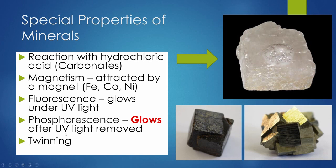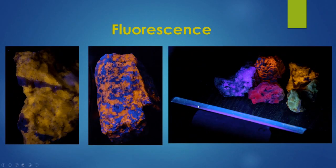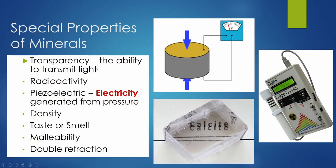Phosphorescence is when the mineral keeps glowing after the light is removed — it absorbs some of the energy. Fluorescence only occurs while the light is on. Minerals can also be slightly magnetic; iron, cobalt, and nickel are the three magnetic elements. Just because a mineral has iron doesn't mean it's magnetic, but magnetite and hematite are quite magnetic. Here's the fluorescence — these minerals under a UV lamp look pretty cool.